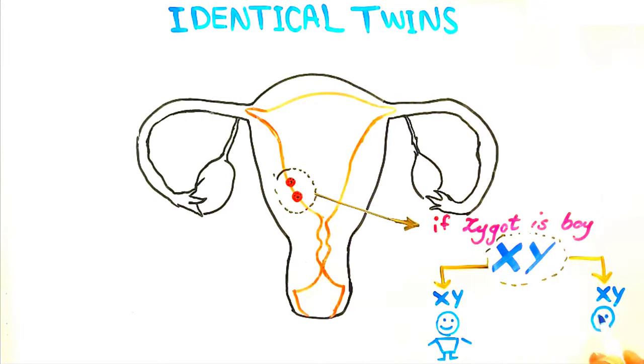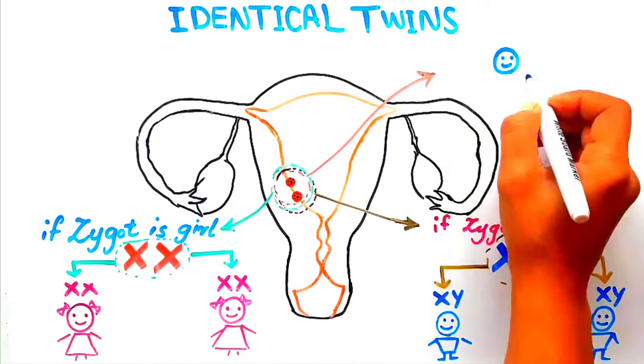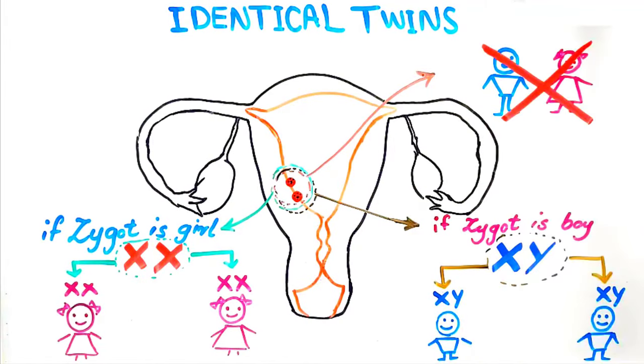They will be boy and boy, or girl and girl. We can never have a boy-girl set of identical twins because they must have the same set of genes, XX for girls and XY for boys.